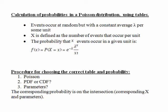In this recording we look at calculation of probabilities in a Poisson distribution using statistical tables. Just be aware that the way in which such tables are presented for the Poisson distribution can vary a little. However, the tables we're going to use are a fairly standard format and give the general principle of using such tables applied to some examples.